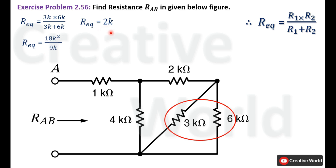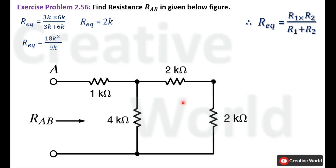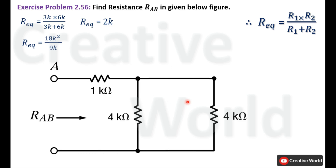This 2 kΩ is the equivalent resistance of the two parallel connected resistances, so we replace them with a single 2 kΩ resistor. Now these two resistances are in series, so their equivalent is 2 kΩ plus 2 kΩ, which equals 4 kΩ. We replace them with a single 4 kΩ resistor.